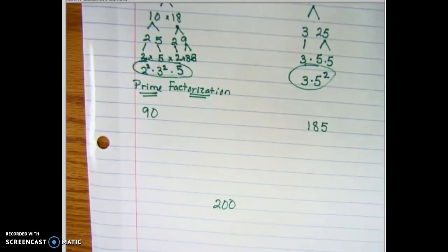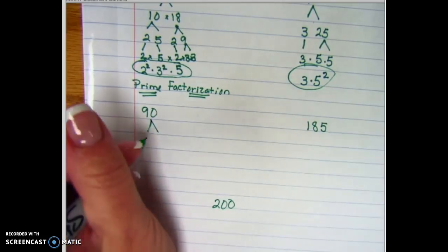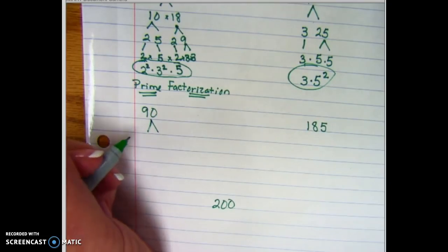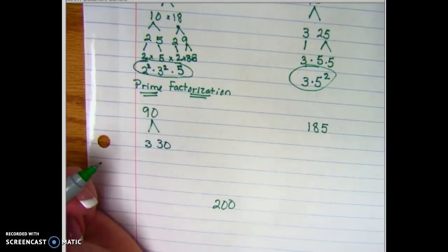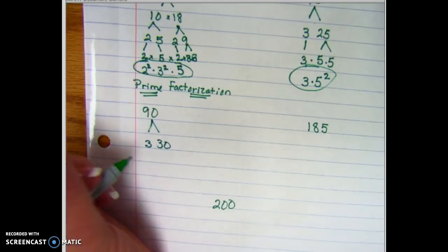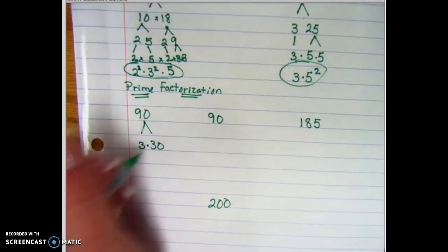Let's try the number 90. It doesn't matter which way you break it apart - you could do 10 times 9, or you could do 3 times 30. You are going to end up with the same building blocks no matter which way you do it. I'm going to show you that right now. So we're going to do 3 times 30 to start with.